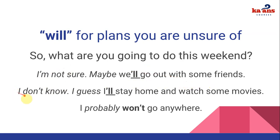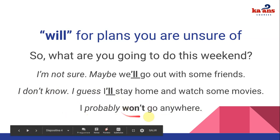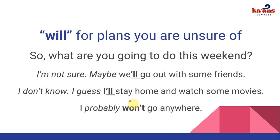Another example: 'I don't know, I guess I'll stay home and watch some movies.' 'I don't know' and 'I guess' both signal an unconfirmed possibility, so we use will, abbreviated as I'll. Finally, we can use the negative form won't: 'I probably won't go anywhere.' That covers using going to and will for future plans.